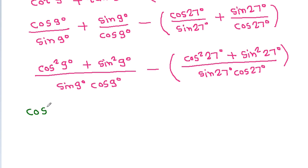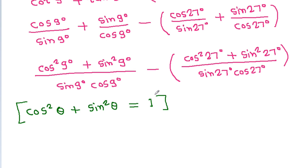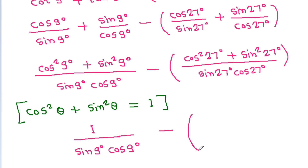Since cos²θ + sin²θ = 1, this simplifies to 1/(sin 9° cos 9°) minus 1/(sin 27° cos 27°).